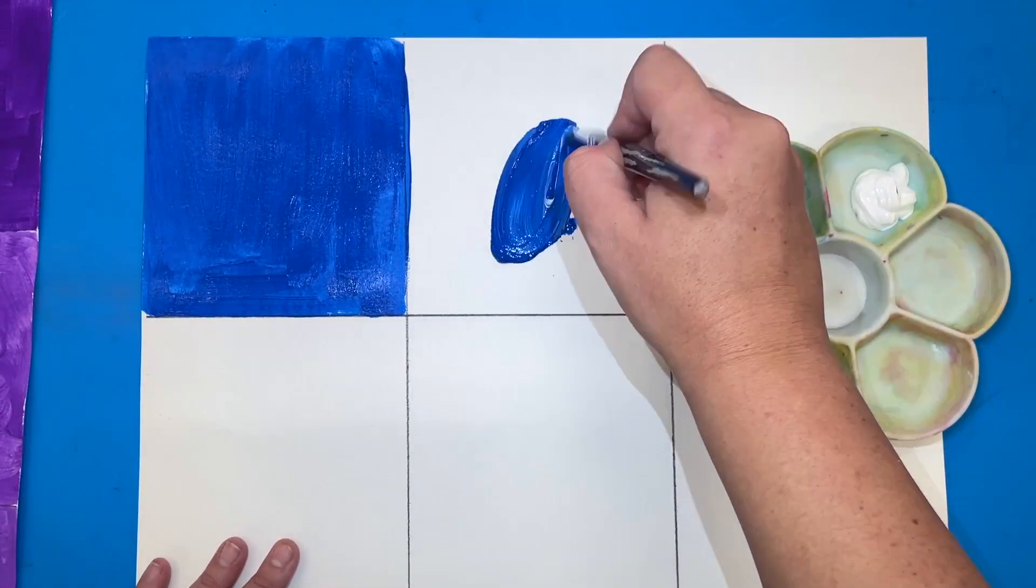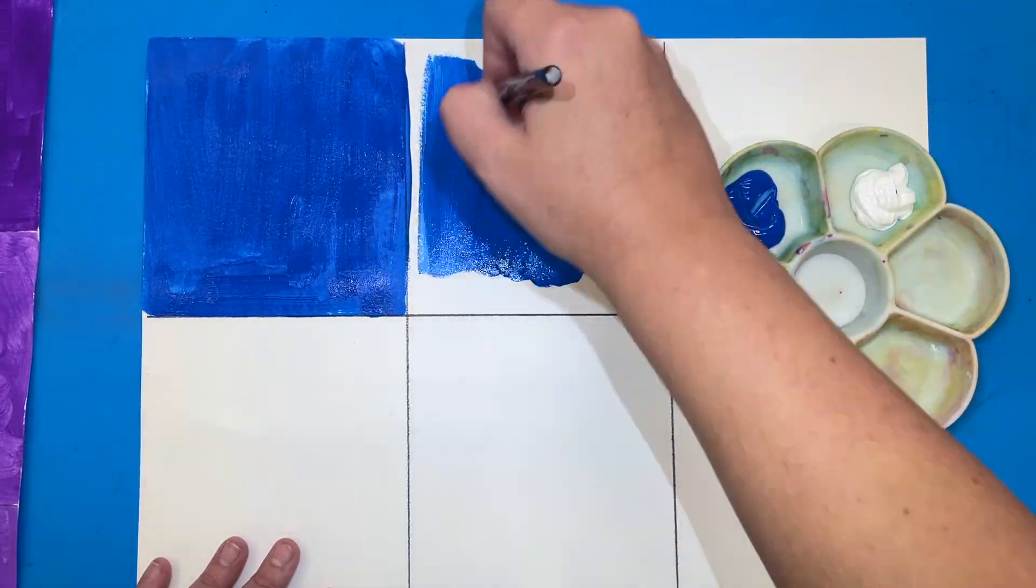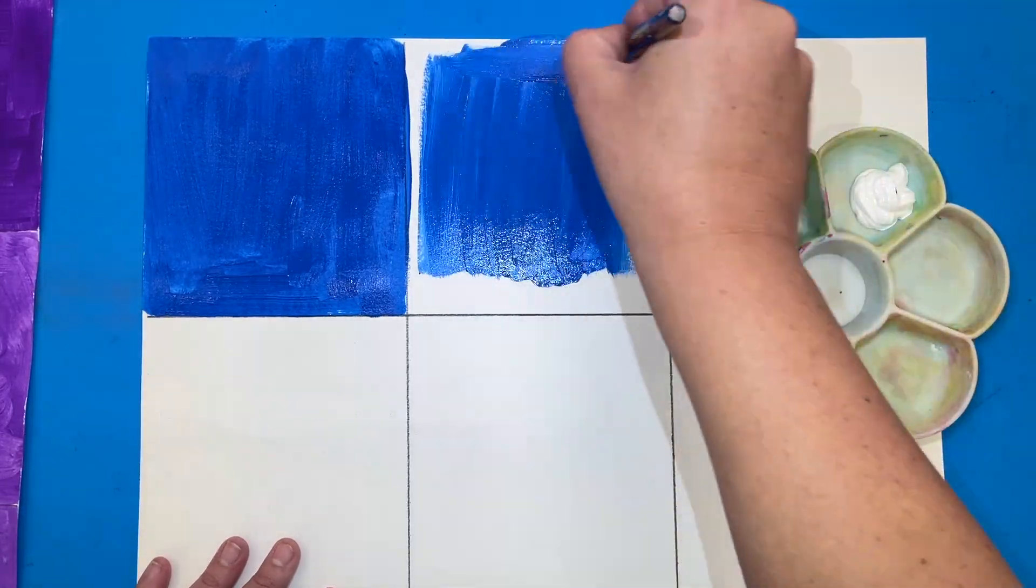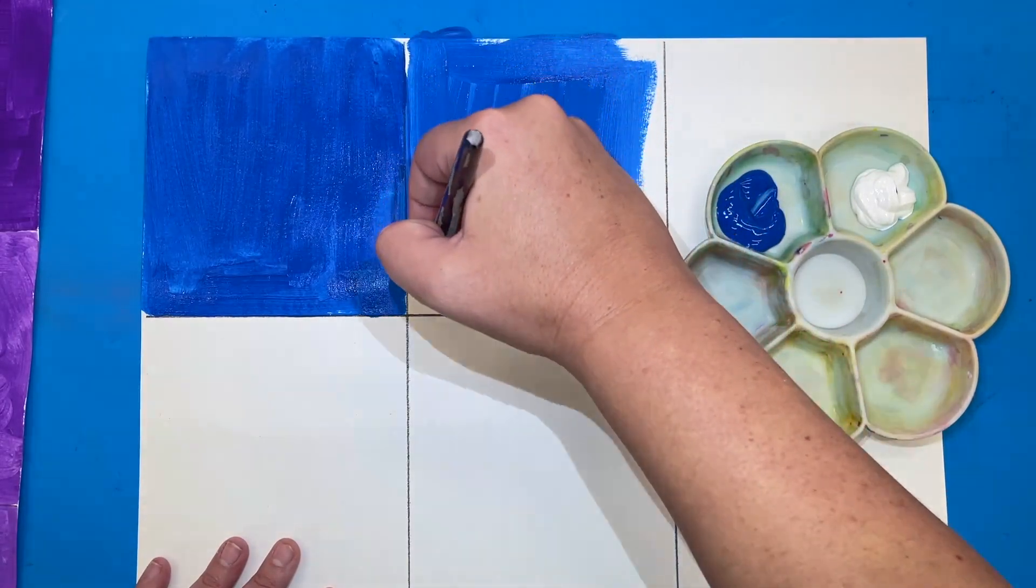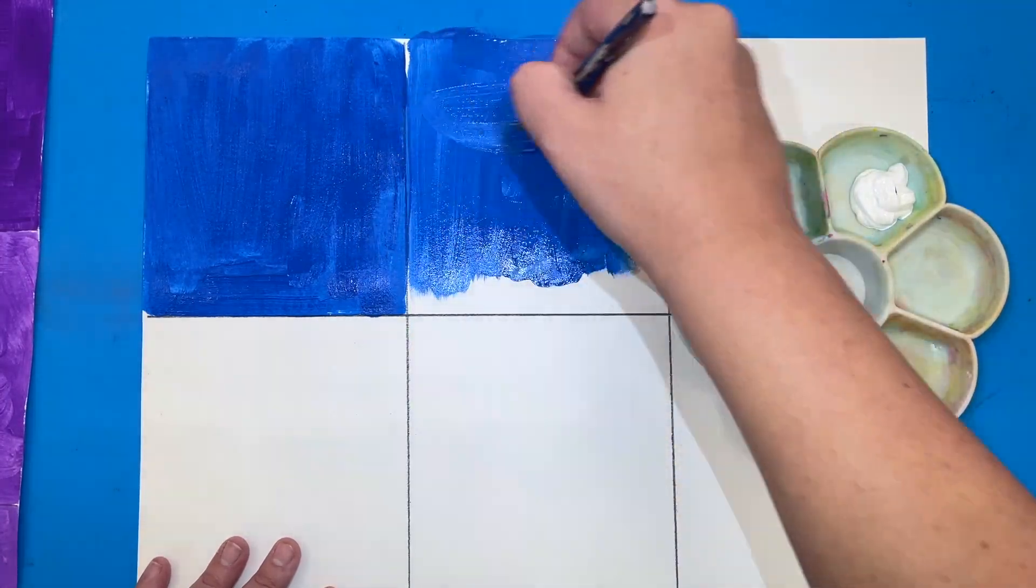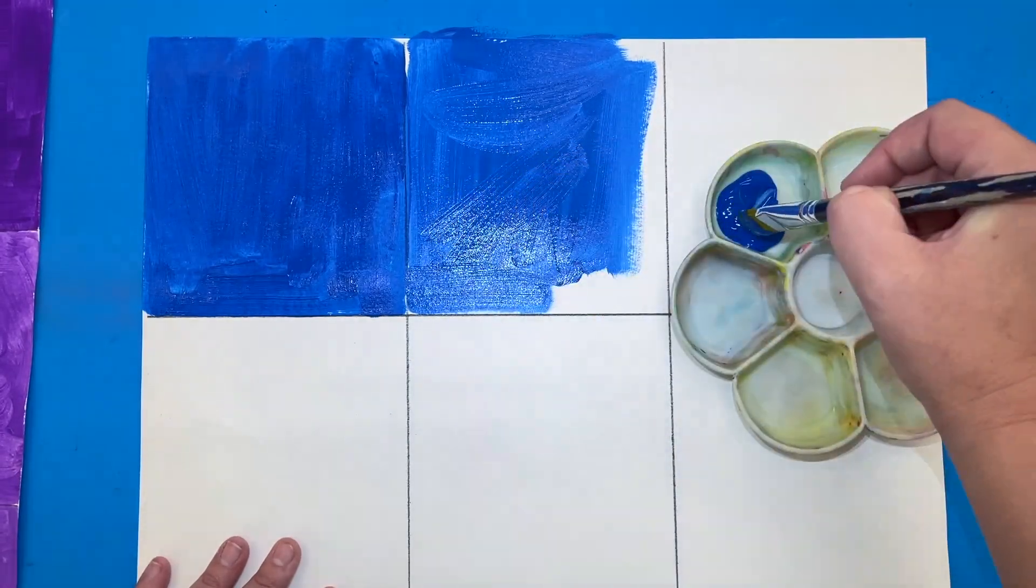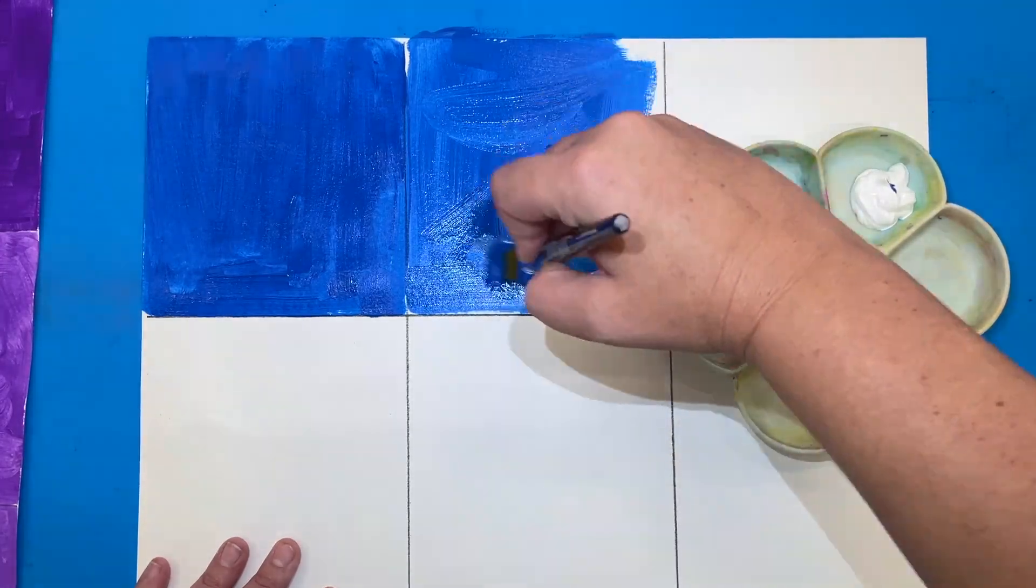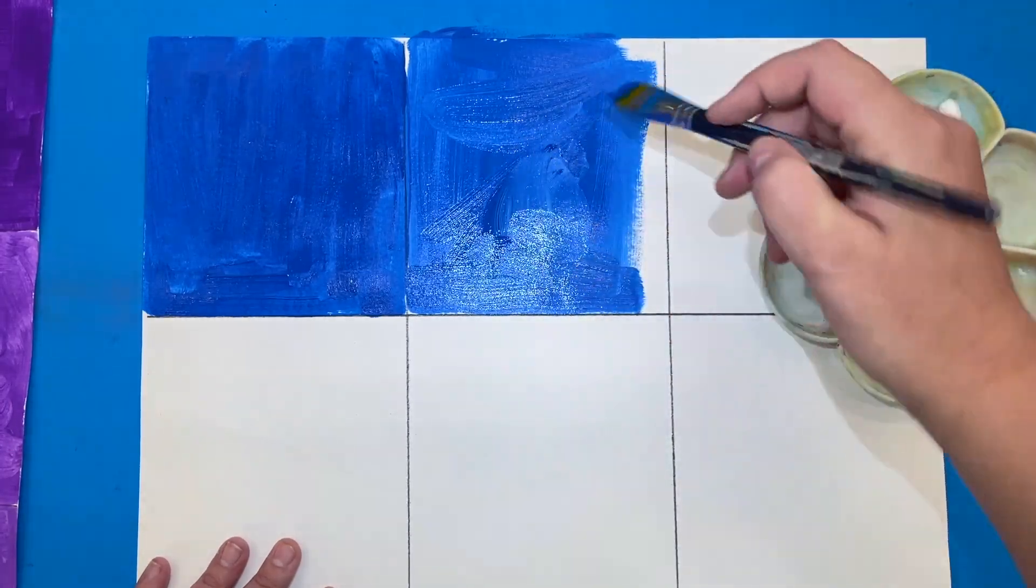Today we're not actually going to use any water. We are just going to continue our painting with a dry brush because we're not changing colors really, we're just creating further value changes with our paint. So if you need a little bit more paint because you didn't put enough on your paper to cover, do the same exact idea. Put blue first and then a small tap of white, mix it on your paper, and then spread it into the places on your square.